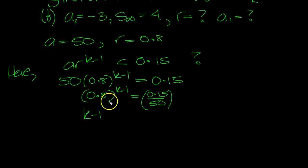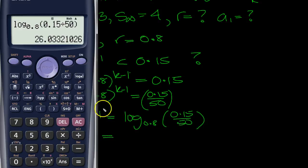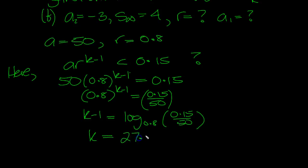So k minus 1, just write this in log form. Bringing this down becomes the base of the log. So k will equal log base 0.8 of (0.15 divided by 50), plus 1. That gives us 27.03.